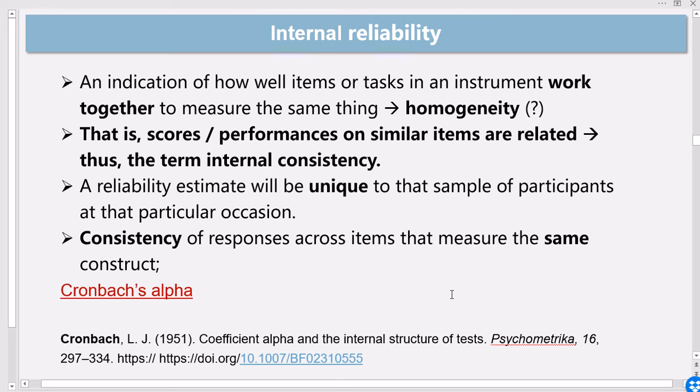Some authors and scholars refer to it as homogeneity, whereas others do not agree with using the terminology homogeneity. They think that Cronbach's alpha is not about homogeneity because homogeneity is usually associated with the concept of unidimensionality, whereas Cronbach's alpha cannot be taken as a measure of unidimensionality.